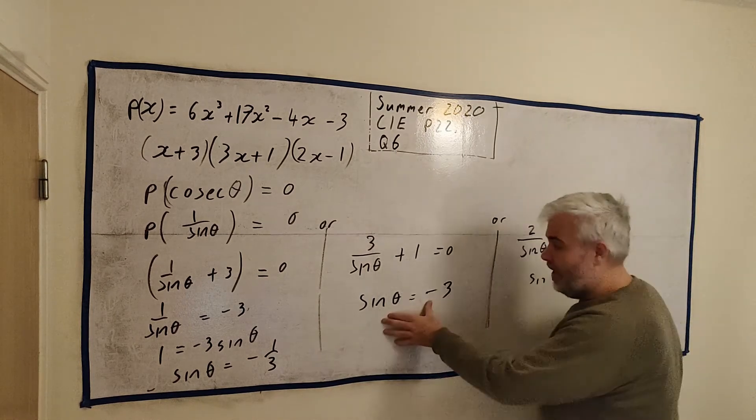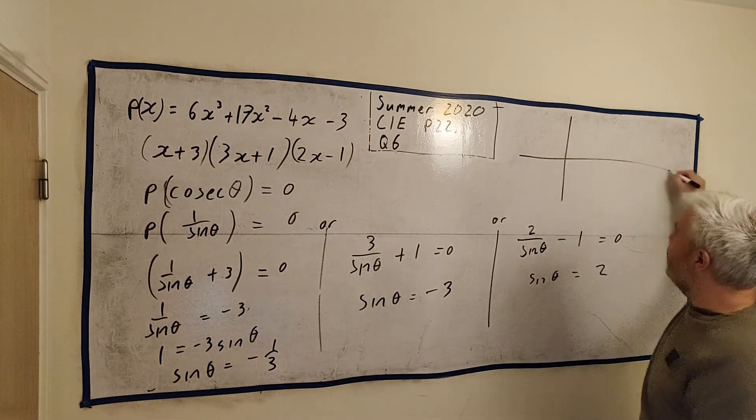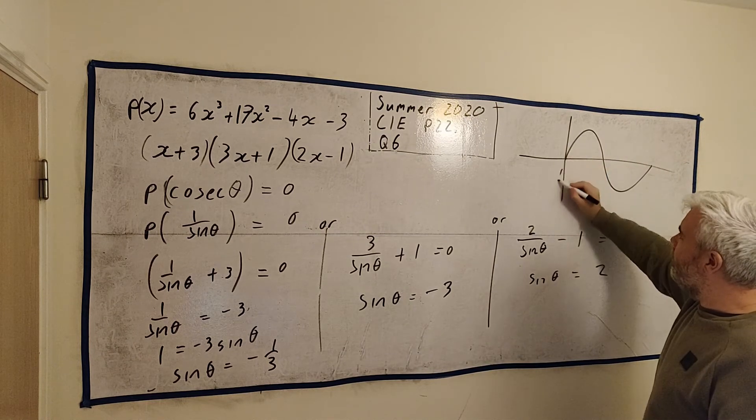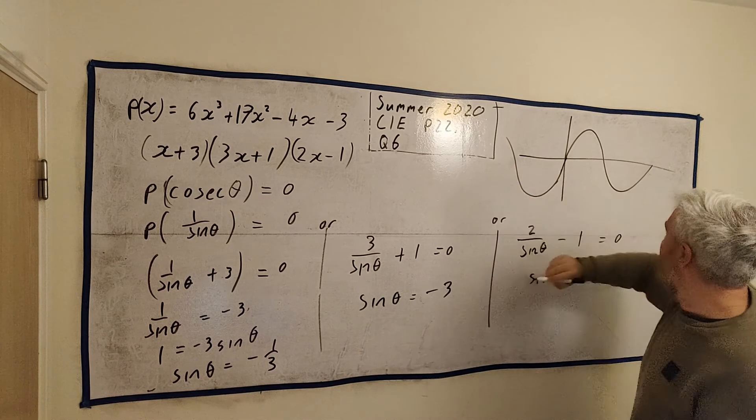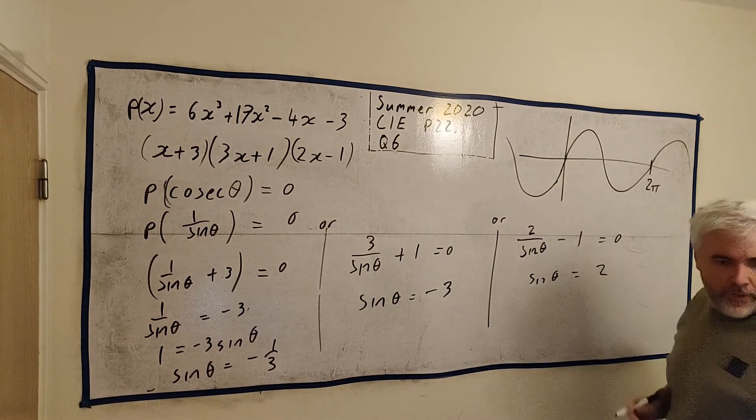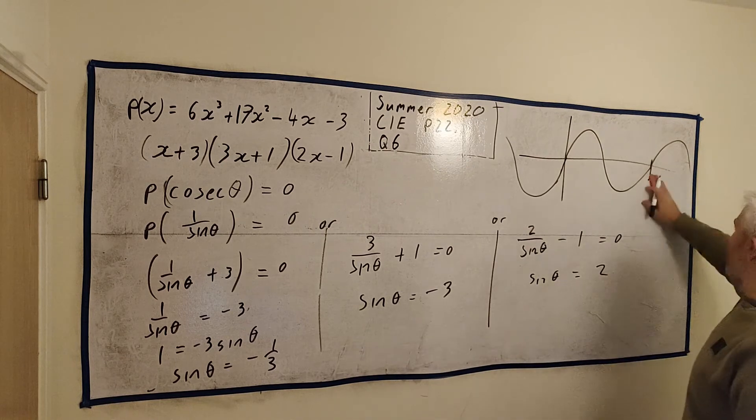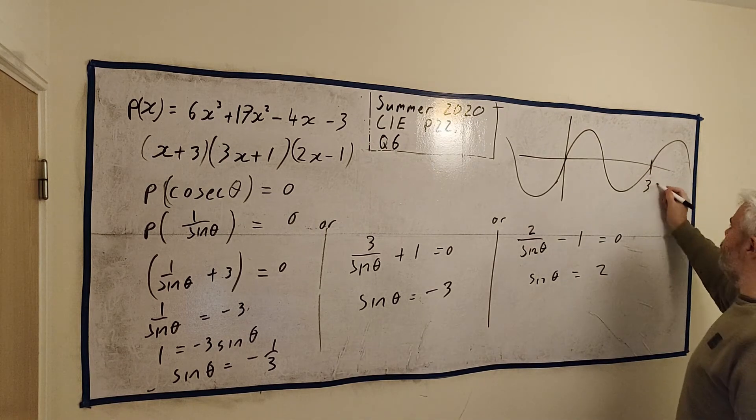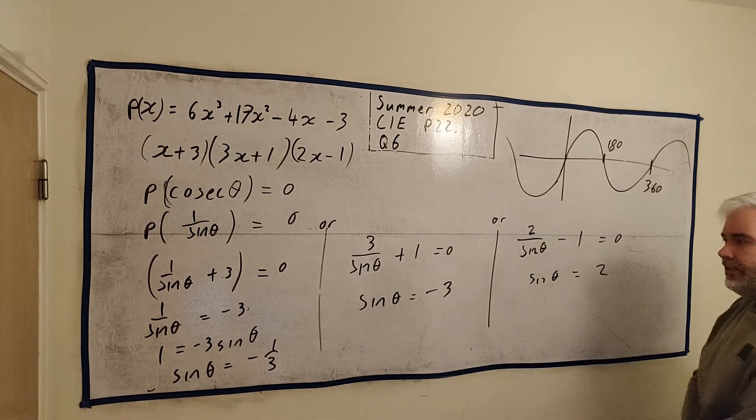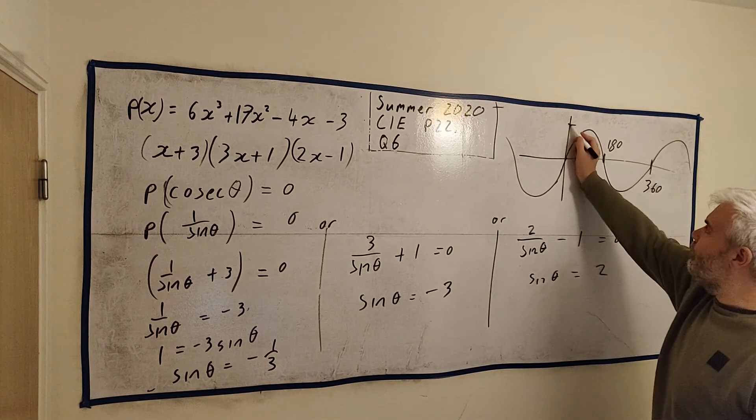Now, this is a problem. Sin theta. Let me draw it here quickly. I'm going to use it again in a minute. Here's up to 360, up to 180. I'm going to use this in a minute. This number, the highest this number gets is 1. The lowest this number gets is minus 1.